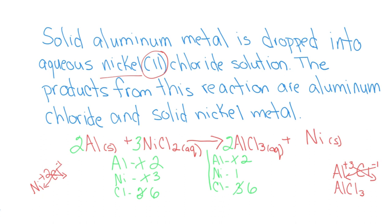And then on the product side, I need to put 3 here, and that gives me 3 nickel. So my coefficients are a 2, a 3, a 2, and a 3. And the equation is balanced.